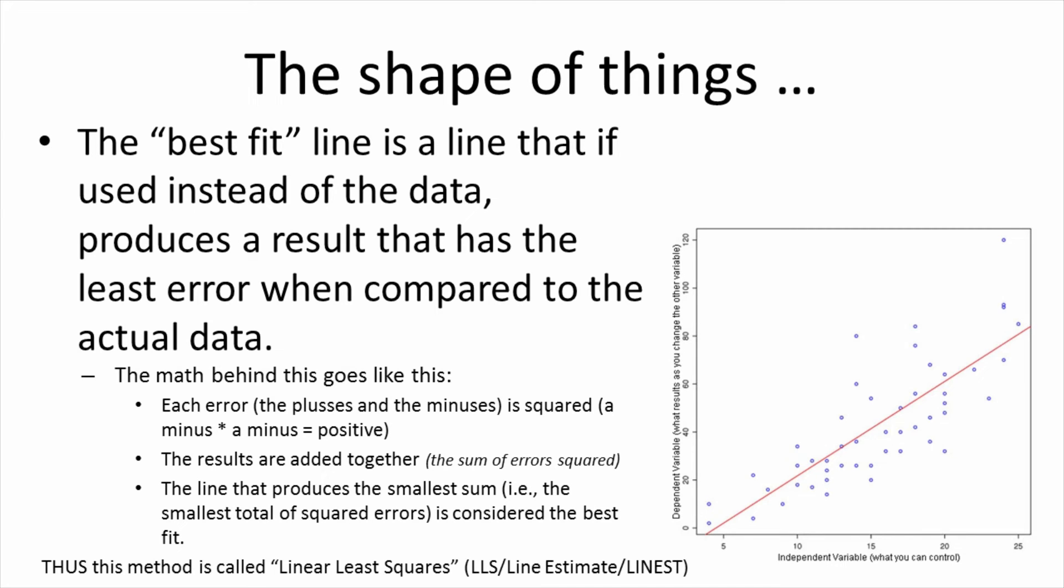Linear, meaning we are looking for a line. Least squares, meaning we are looking for the least value of the sum of the squares of the errors. Since this line only approximates the data, it is sometimes called a line estimate. So when using software to find the best-fit line, you might find functions like LLS, line EST, which is an abbreviation for line estimate, and so on.